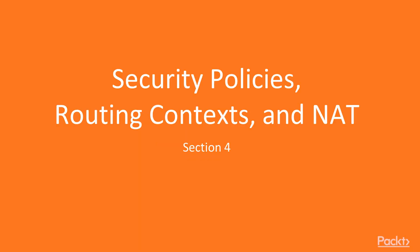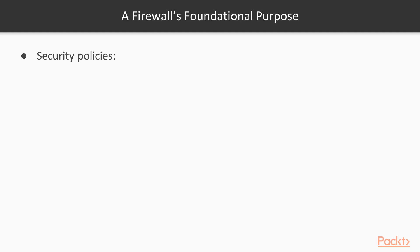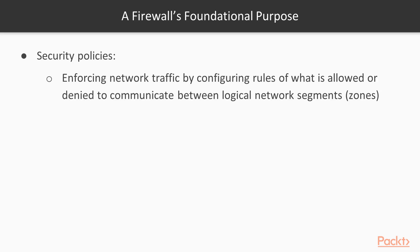Let's continue on to Section 4, Security Policies, Routing Context and NAT. In Section 4 we're going to begin discussing security policies, and this is the reason why you put a firewall on the environment. You want to isolate networks and put traffic rules behind each one so you can know what can go where, and enforce what is allowed to go from one side of the network to the other.